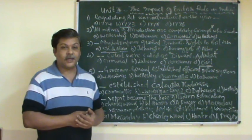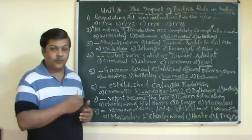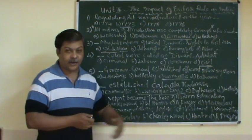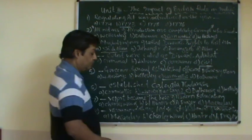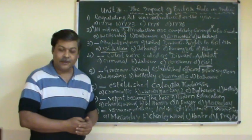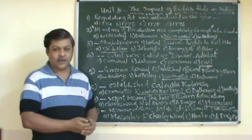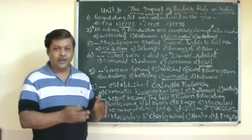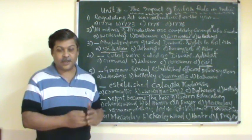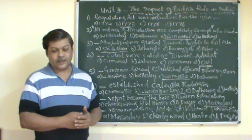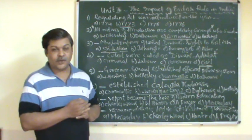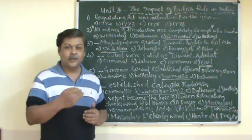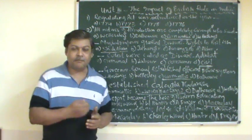Whose report became the base of modern education? The choices given are Charles Wood, William Hunter, Andrew Fraser, and Macaulay. The answer is Macaulay — the Macaulay Report. Macaulay was a member of the Governor General's Council, and at that time William Bentinck was the Governor General. Based on Macaulay's report, the English education system and English language were introduced in India in schools, colleges, and educational institutions. His full name was Thomas Babington Macaulay.